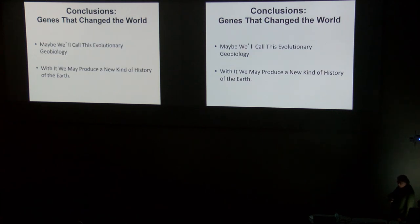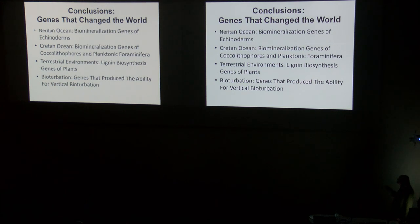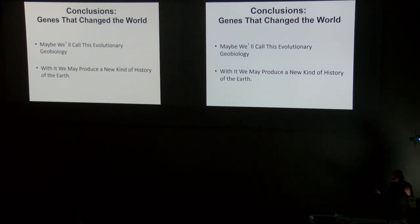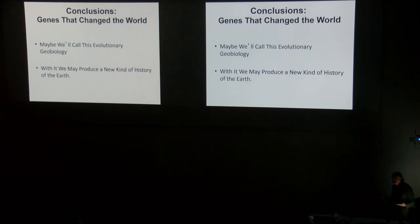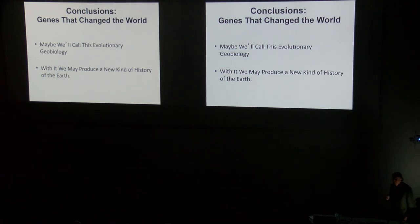To summarize, I've shown examples spanning echinoderm genes and the Neritan ocean, coccoliths and planktonic forams in the Cretan ocean, lignin in terrestrial environments, and bioturbation by both priapulids and euechinoids. This is a wide open area. We hear a lot about molecular biology at meetings, and this is just another way to think about it — maybe we'll call it evolutionary geobiology, but ultimately I think we'll have a new way to understand the evolutionary history of Earth.